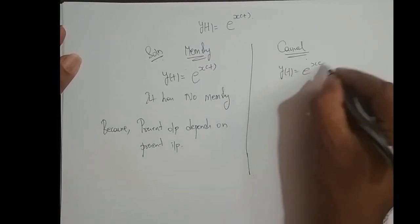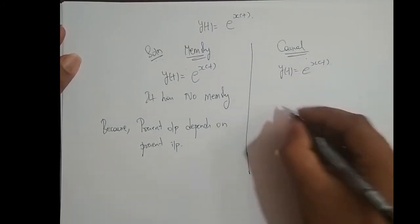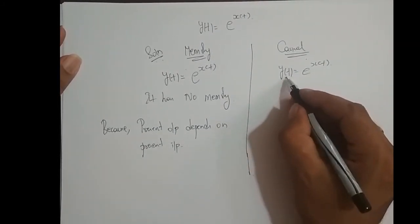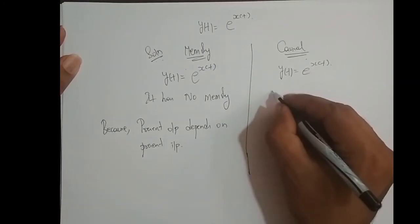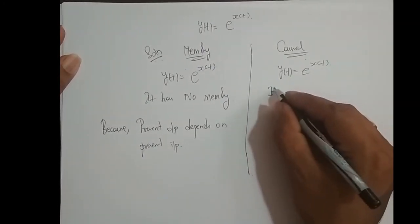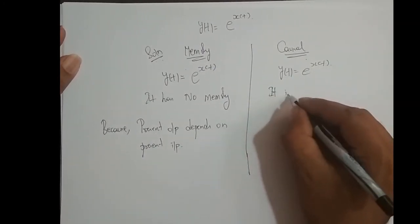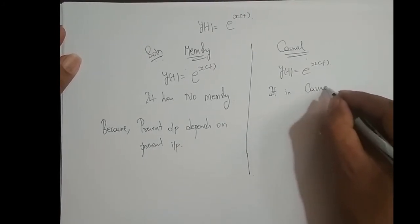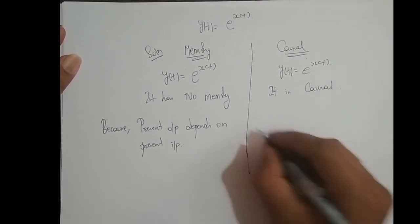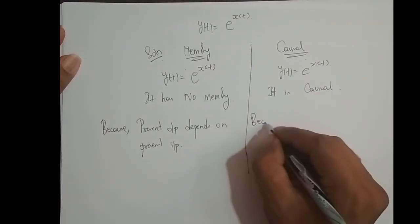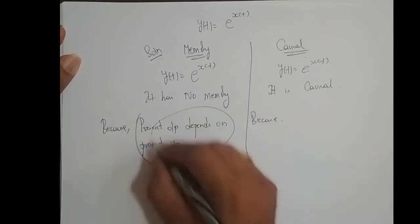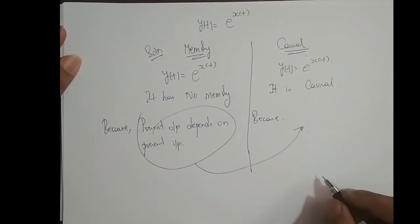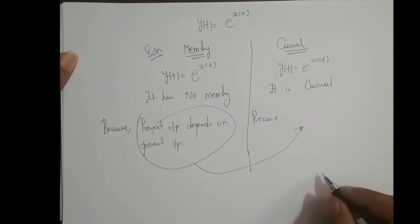For causality of y(t) = e^(x(t)): present output depends upon present input value. Therefore, it is causal, because present output depends upon present input value.